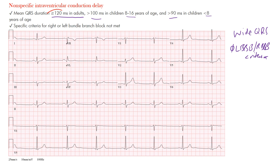The focus here is on adult patients, so over 120 milliseconds. Looking at the QRS complex — from the P wave through the QRS to the T wave — the duration is measured from the beginning to the end of the QRS complex. Normally in adults it should be less than 120 milliseconds, but once it reaches or exceeds that point, we call it an intraventricular conduction delay, and you have to determine what type.